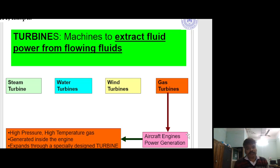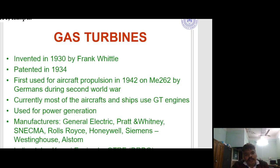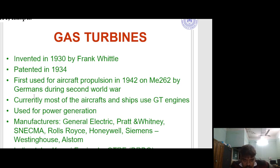High pressure, high temperature gas generated inside the engine expands through a specially designed turbine. The gas turbine was invented in 1930 by Frank Whittle, patented in 1934, and first used for aircraft propulsion in 1942 by Germany during the Second World War. Currently, most aircraft and ships use gas turbine engines. For power generation, major manufacturers include General Electric, Rolls-Royce, Honeywell, Siemens, and L-Storm.